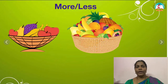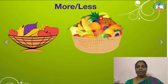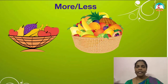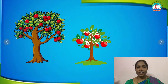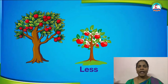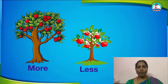Look at the next one. We can see two baskets full of fruits. Which one has more fruits? Very good. This basket has more fruits, and this one has less fruits. The next one — which tree has less fruit, children? This tree has less fruits, and this one has more fruits.